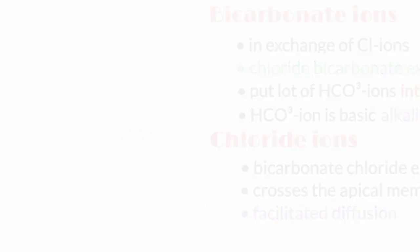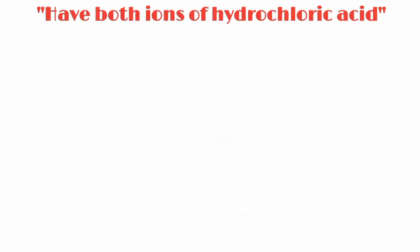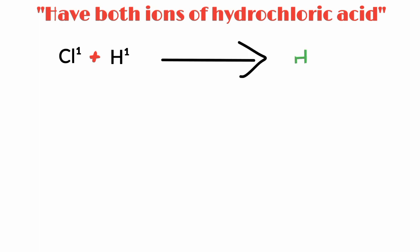Now we have both ions of hydrochloric acid — the chloride ions and hydrogen ions — in the stomach lumen. These ions combine with each other to form hydrochloric acid.